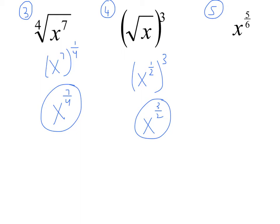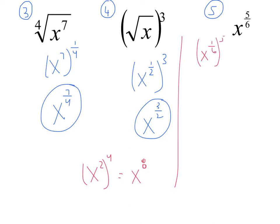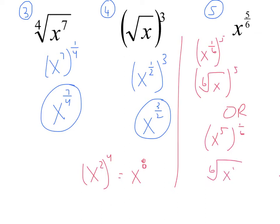That's applying the important property you've got to know: x squared to the fourth is the same thing as x to the eighth — the exponents multiply. One-half times three is three-halves. For number five, there are a couple of ways to do this. You could think of this as x to the one-sixth raised to the fifth power, which is the sixth root of x raised to the fifth. Or you may have said this is x to the fifth, that whole thing to the one-sixth, which is also the sixth root of x to the fifth. There are two ways to write this answer.